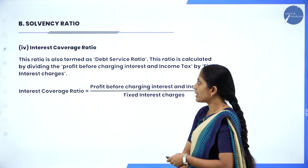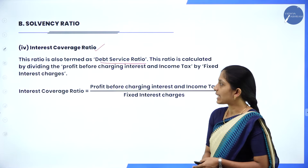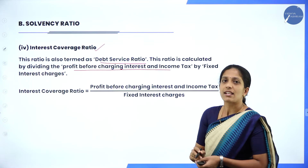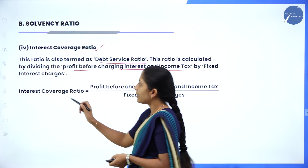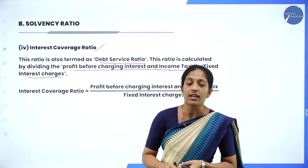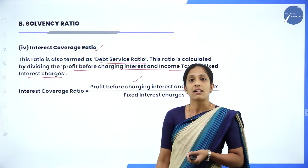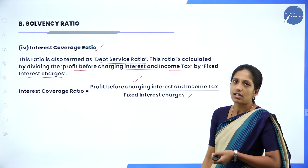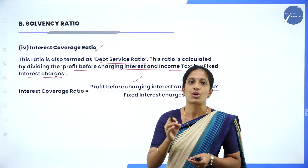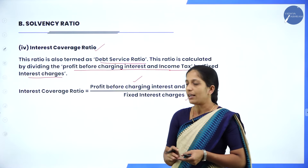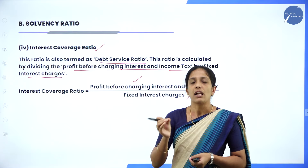The fourth type is interest coverage ratio, also termed as debt service ratio. This ratio is calculated by dividing profit before charging interest and income tax by fixed interest charges, which are normally given on debentures. The formula is: Interest coverage ratio = Profit before interest and income tax divided by fixed interest charges.